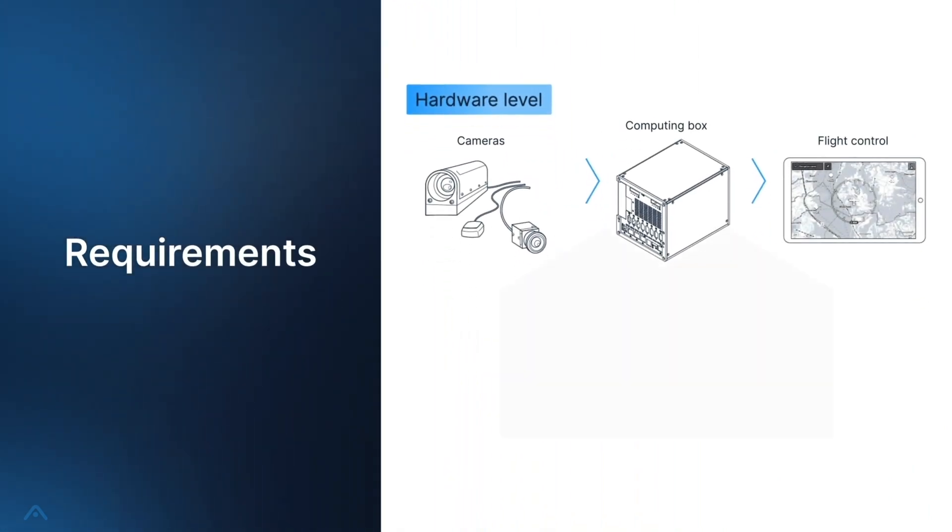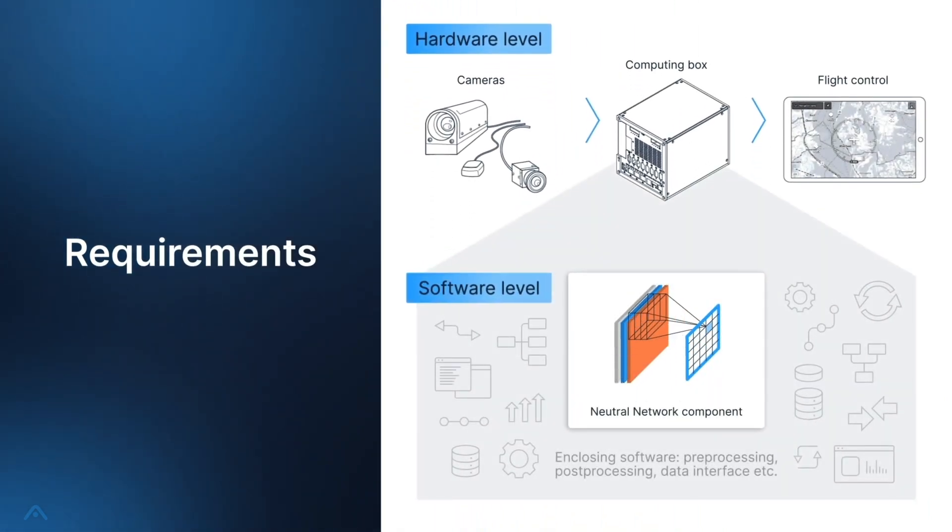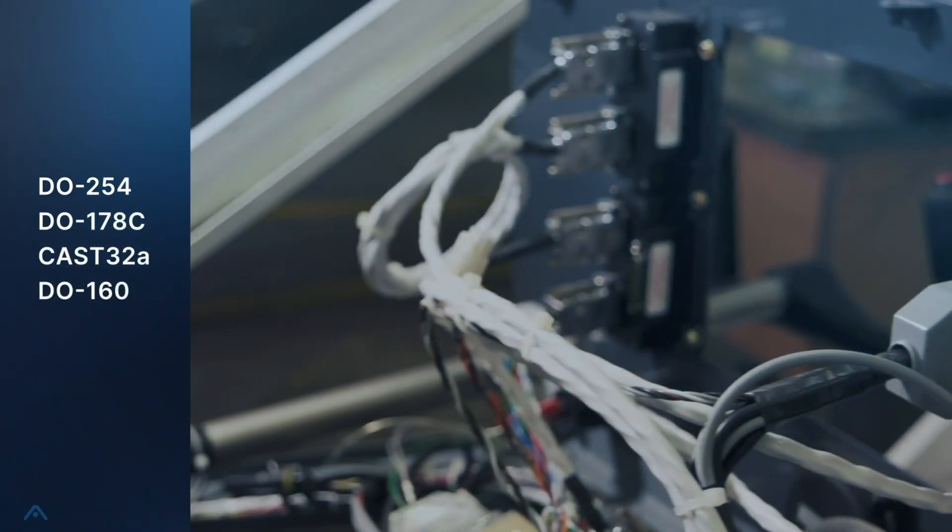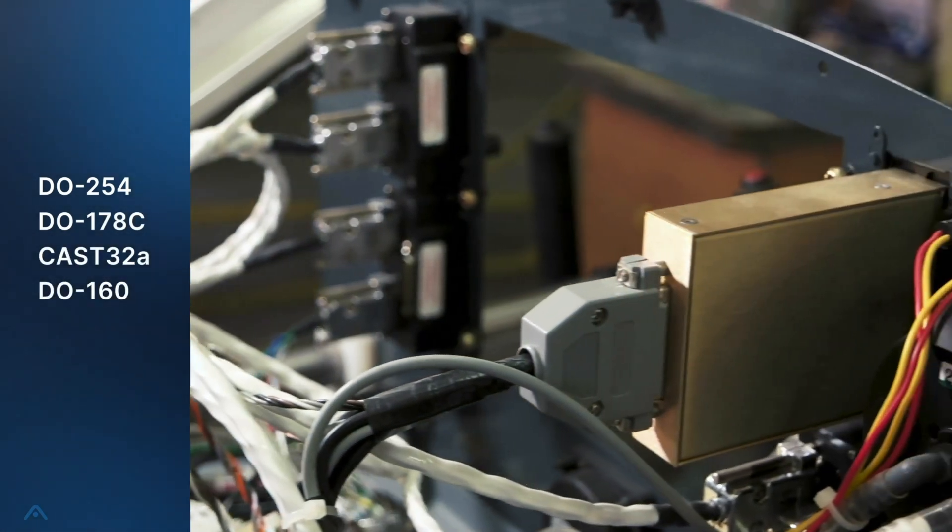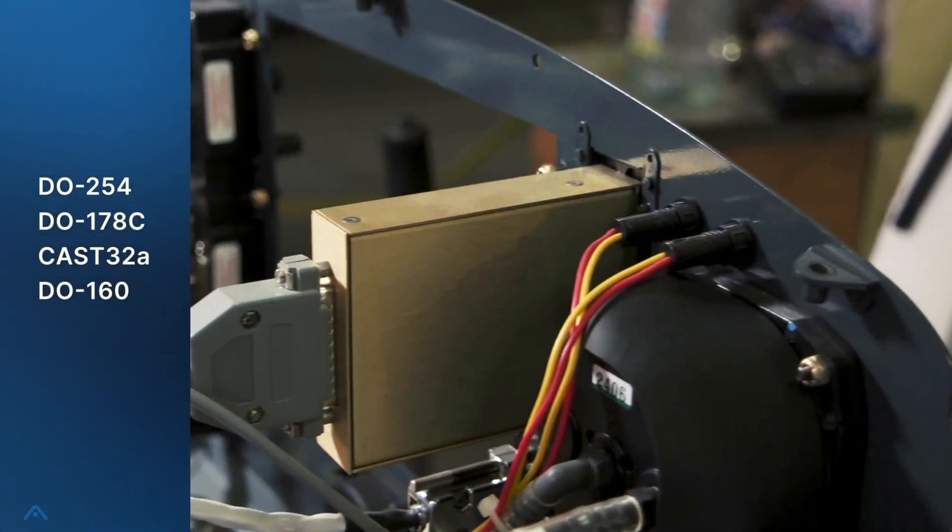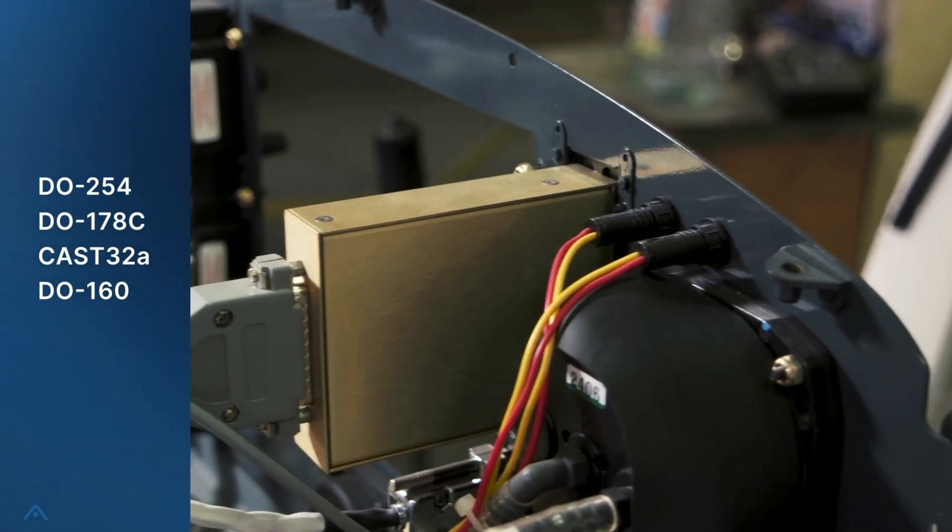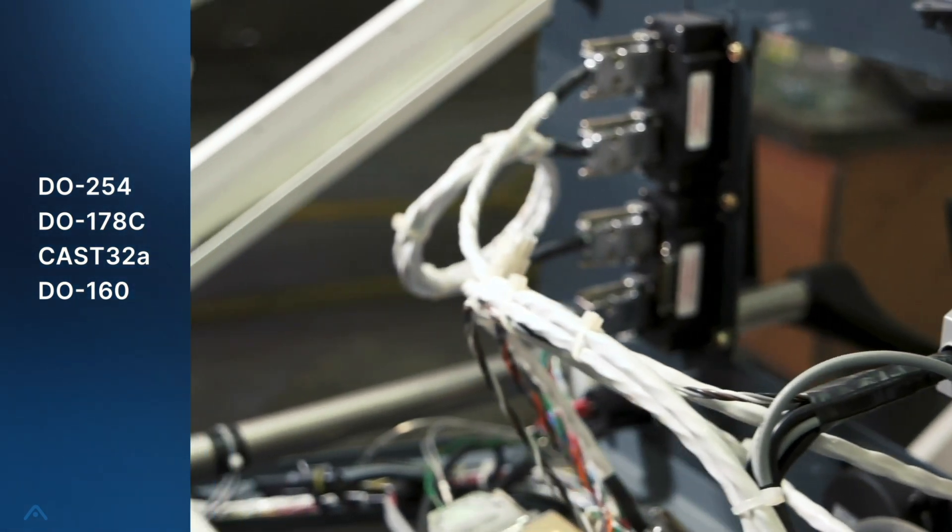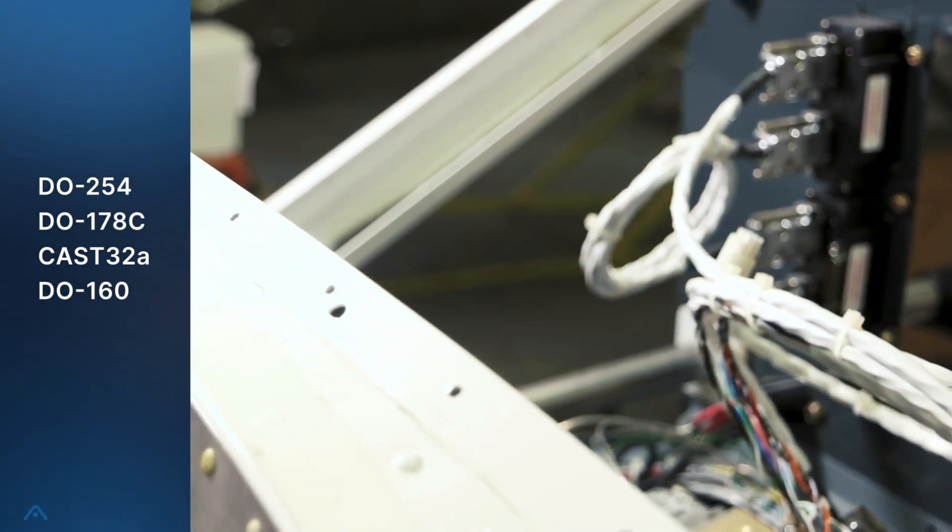Remember that we are talking about a machine learned component of an application of standard architecture. This implies two sets of requirements. First, all the standard requirements for hardware and software remain unchanged. We should prove they work as intended, meet existing standards, and are safe. But this says nothing about how correct is the answer of the neural network.